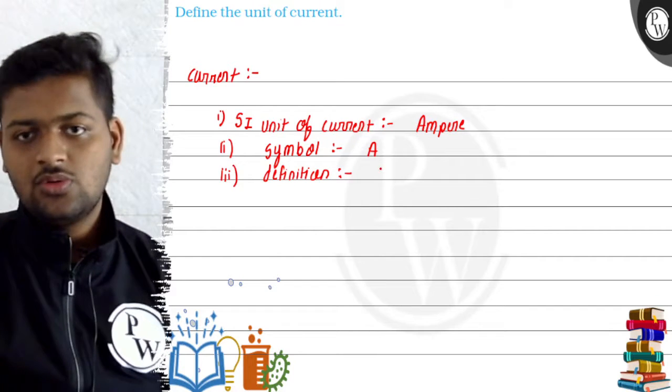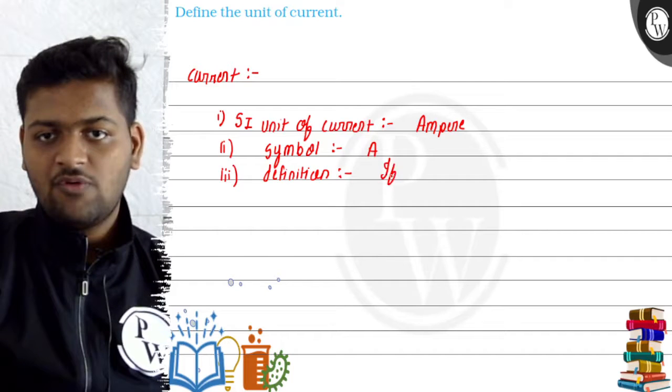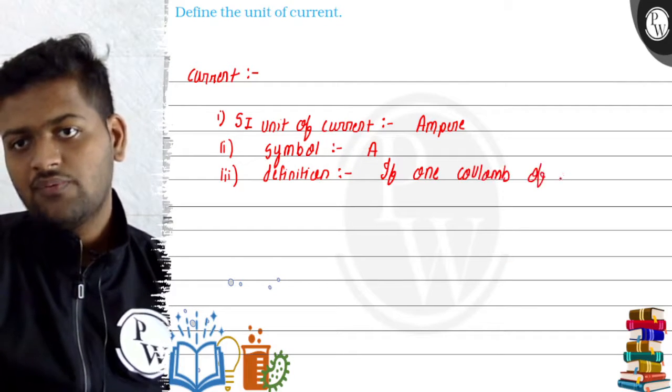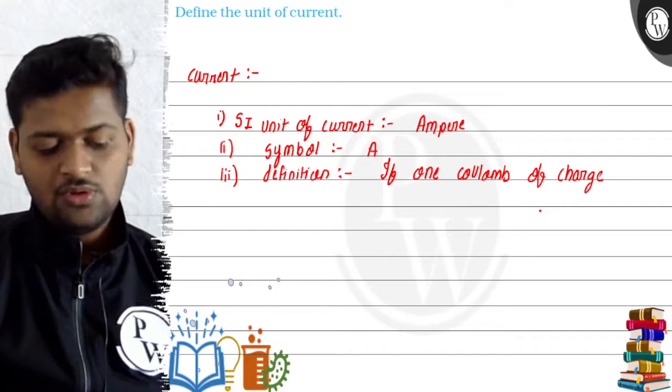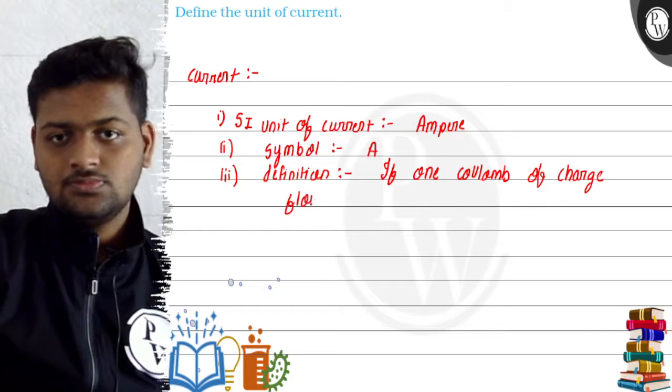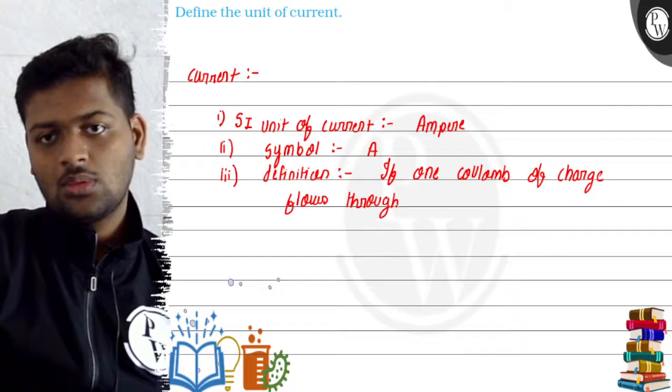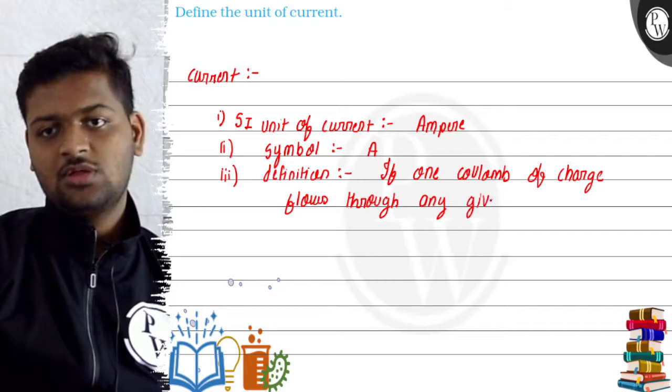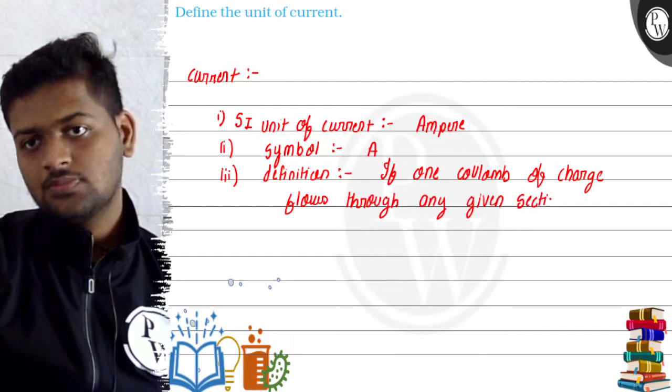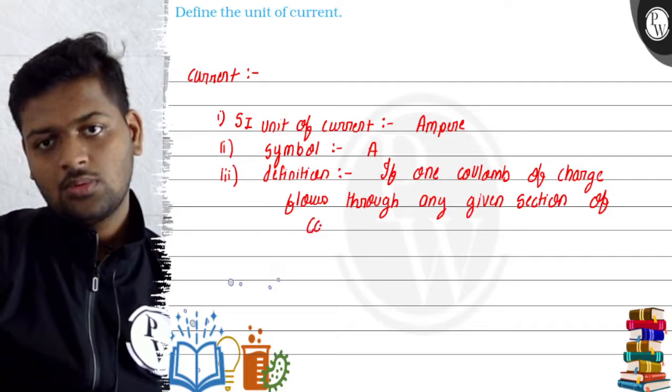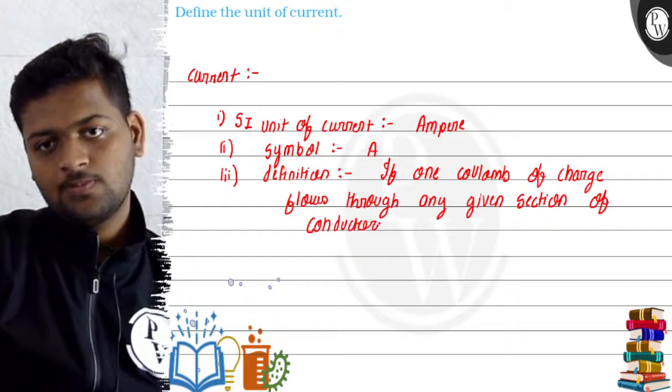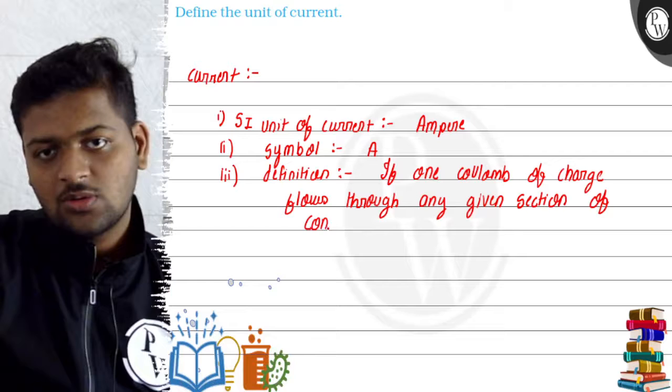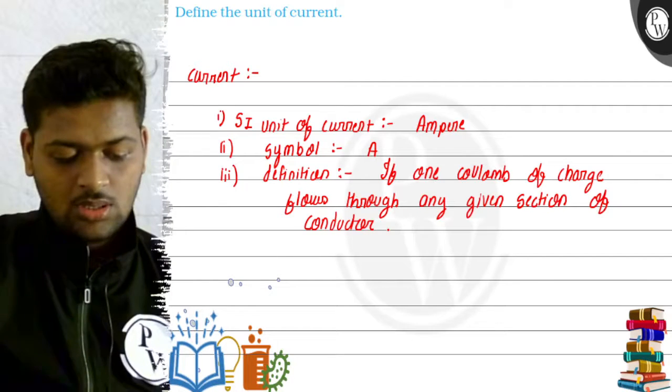Definition of SI unit of current is: if one coulomb of charge flows through any given section of conductor in one second.